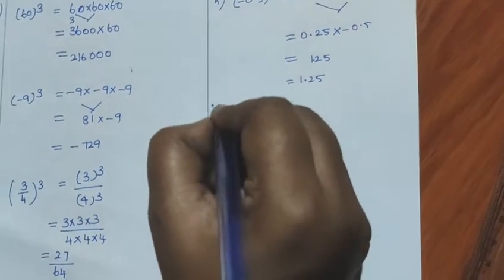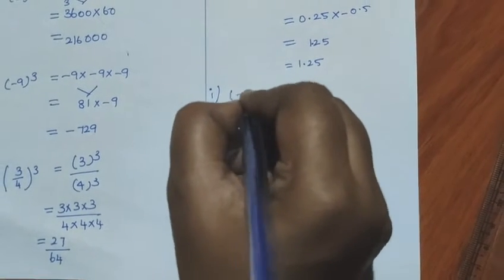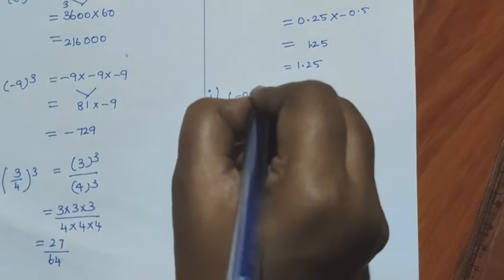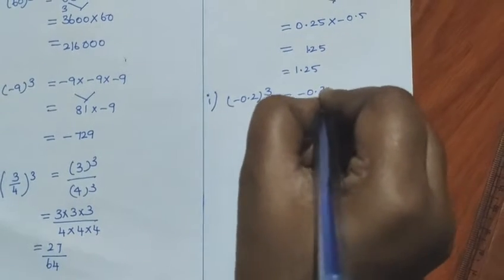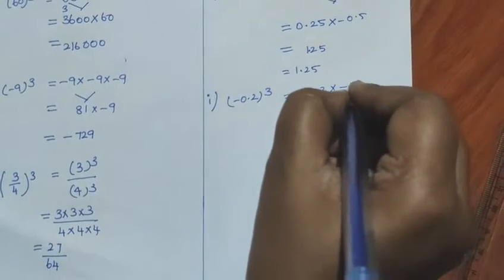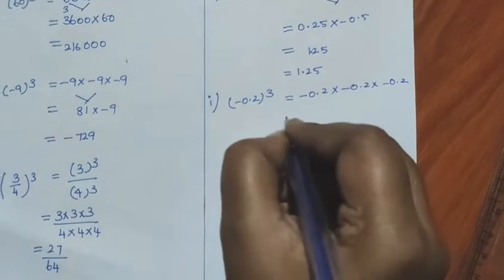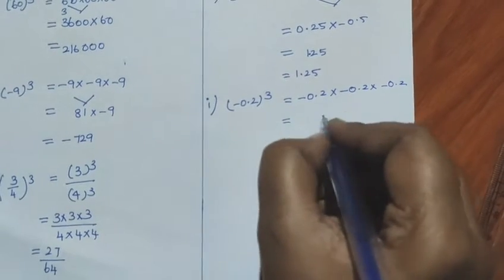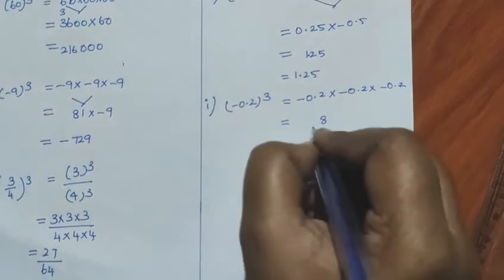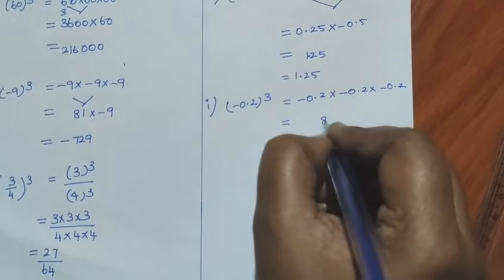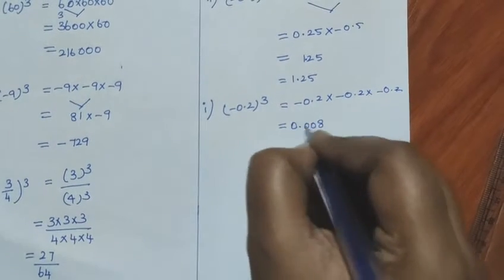I sum: minus 0.2 the whole cube. So minus 0.2 into minus 0.2 into minus 0.2. 2 twos are 4, 4 twos are 8. How many digits? 1, 2, 3 — three digits before. Already 1, 2, 3 zeros.